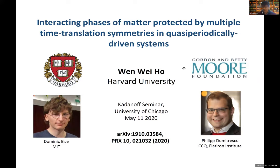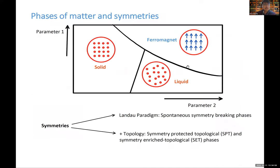Let me give a quick motivation. In the study of condensed matter, we are interested in phases of matter, and symmetries play a very important role. If you tune certain parameters in some abstract parameter space, the system can undergo a phase transition from something regular to something irregular. What really characterizes these phases is the concept of symmetries — in the traditional Landau paradigm, phases can be understood in terms of spontaneous symmetry breaking.